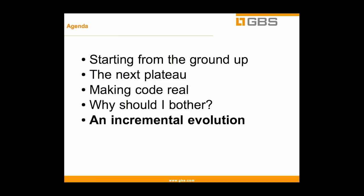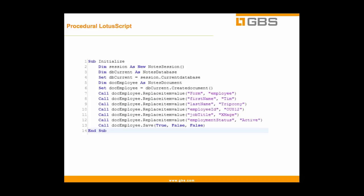We've taken this incremental evolution going from procedures to functions to classes. Let's look at what this actually looks like in our code. Going back to procedural: here's a very simple procedure. I'm just creating an employee record, setting some discrete field values, and then saving that in the application. All of the code is here so I don't have to go anywhere else — it's easy to understand because it's less than 15 lines of code.